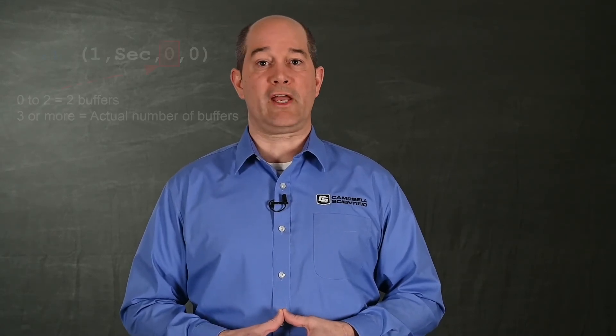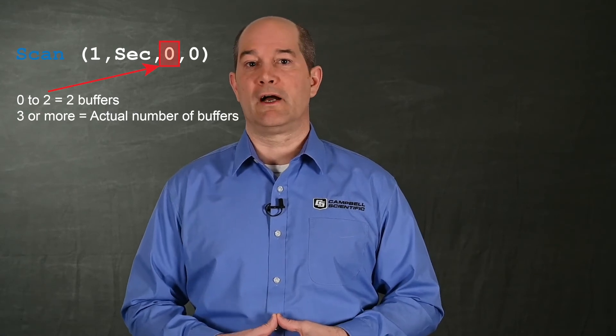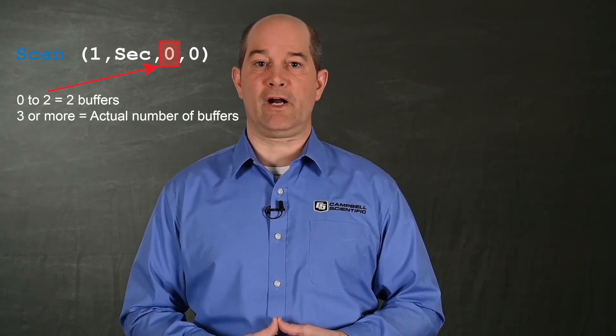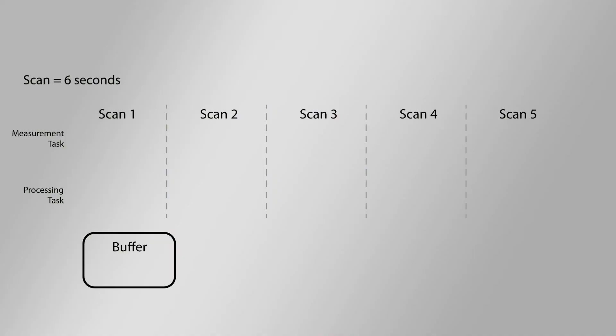Another thing to know is that processing tasks may not always take the same amount of time each scan, because of periodic communication or retries, or conditional statements in your program. The scan buffer, set in the CR Basic scan instruction, allows processing tasks to be stored in a queue and then processed when the processor becomes available. Let's look at how the measurement task processor, the processing task processor, and the scan buffers all work together in pipeline mode.